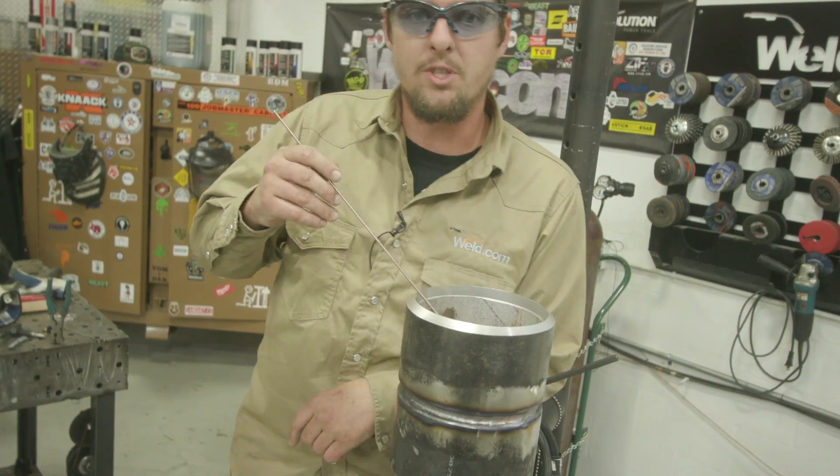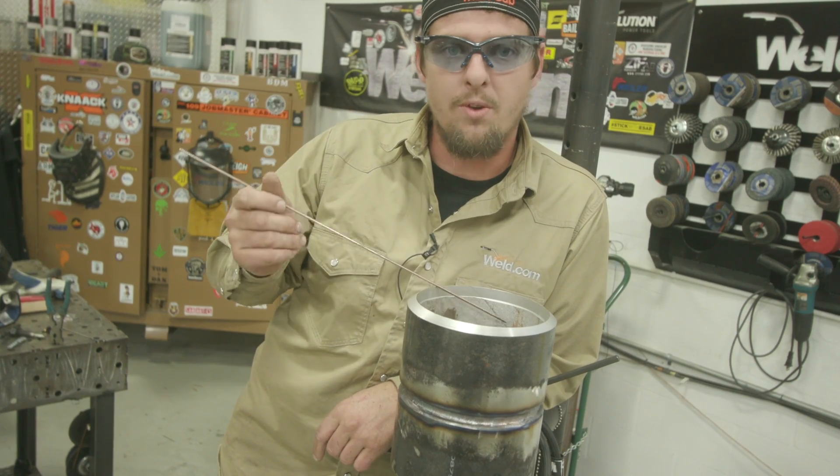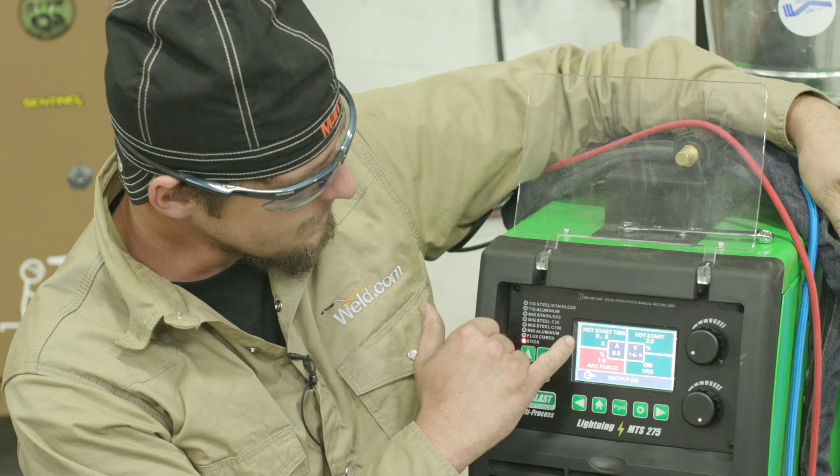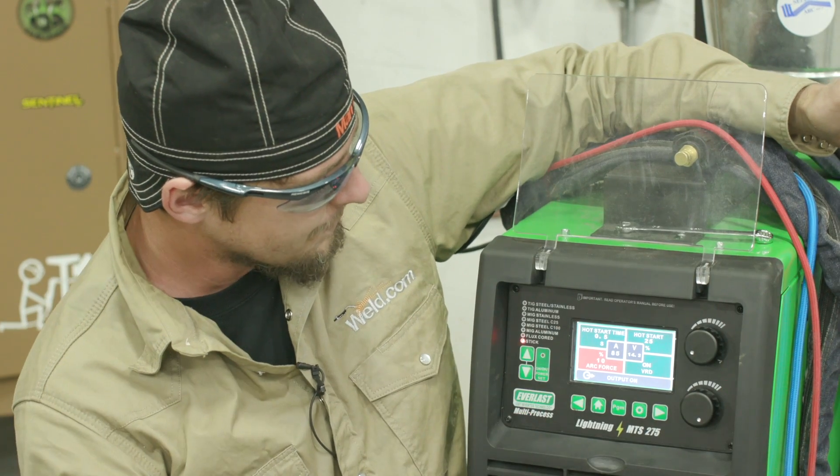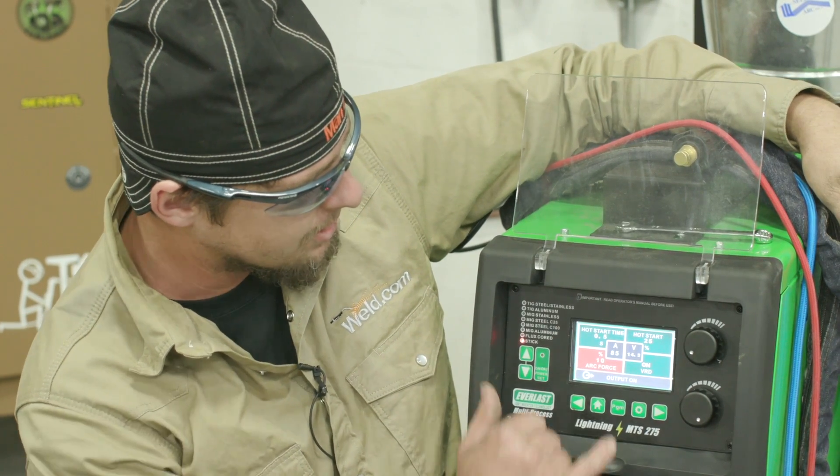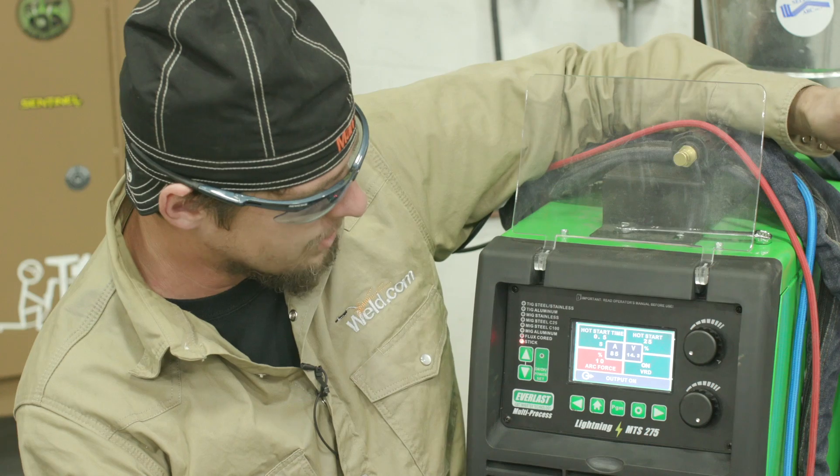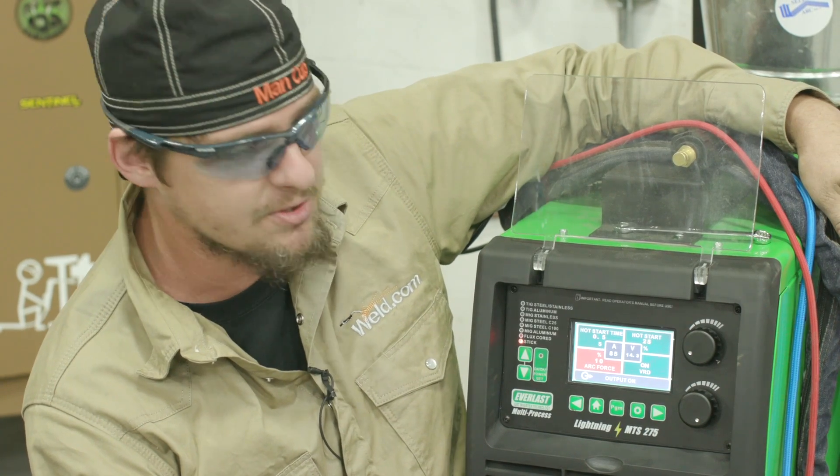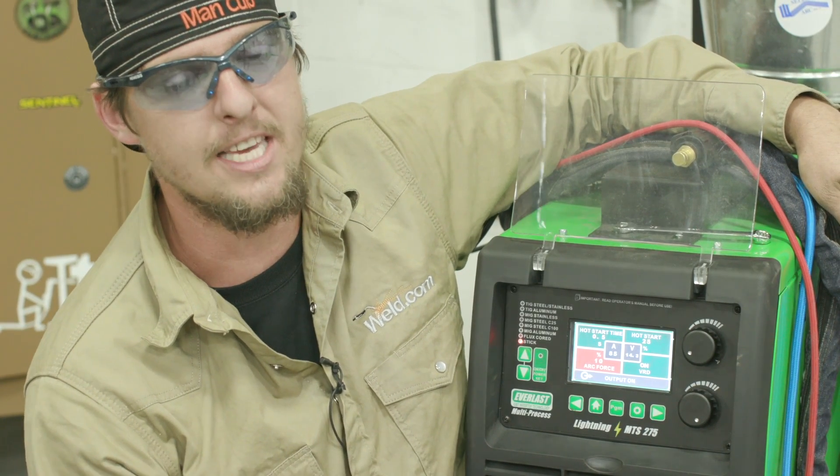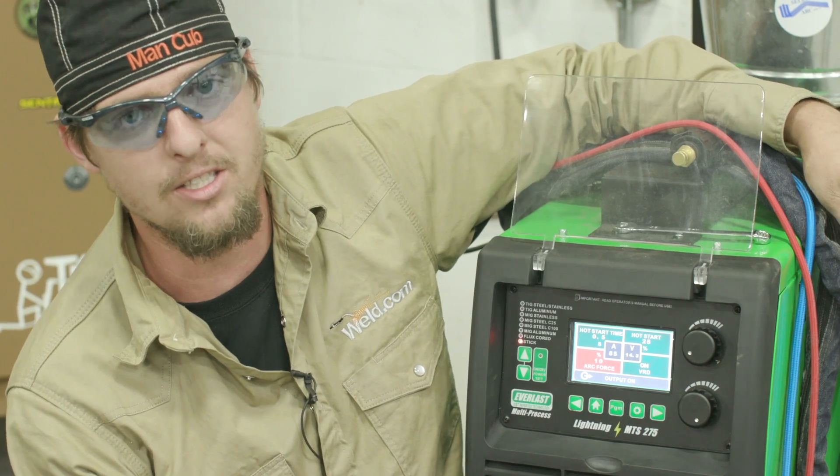So let's get to it guys. I've got a half a second of hot start on the time. Hot start 25%, arc force 10% and the amps 85. We're running 3/32nds E7018 Prime rod. Alright. Let's go ahead and weld this out.